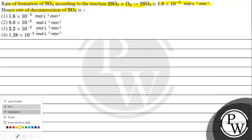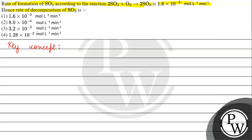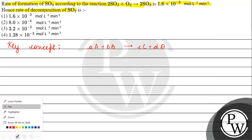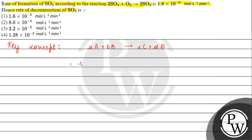The key concept for this question: suppose we have the reaction — A mol of A reacting with B mol of B gives C mol of C and D mol of D. The rate expression relates the change in concentration of each species with respect to time divided by its stoichiometric coefficient. Minus 1/A × d[A]/dt = minus 1/B × d[B]/dt = 1/C × d[C]/dt = 1/D × d[D]/dt.